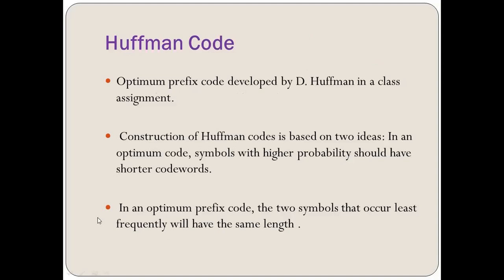What is an optimum prefix code? Optimum means the lowest cost, and prefix code means these are uniquely decodable codes. So these are the two priorities for coding: we need to have the least cost and uniquely decodable codes. That is why Huffman code is called an optimum prefix code.